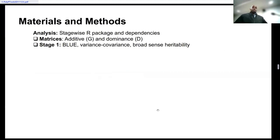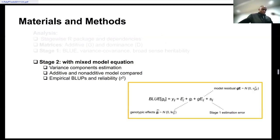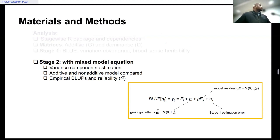For our analysis, we used the StageWise package and its dependencies to generate the additive relationship matrices for both additive and non-additive components. We implemented the two-stage approach in StageWise: in stage one, we generated the BLUEs and the variance-covariance matrices included in stage two, as well as the heritability estimates. In stage two, we were able to decompose the variance components with and without markers. We also generated BLUPs and estimated the reliability using prediction with and without markers.